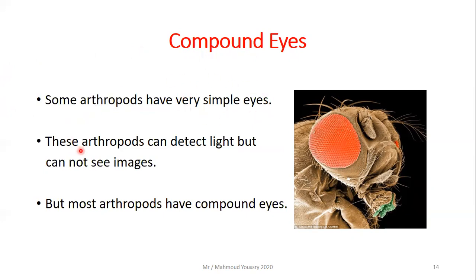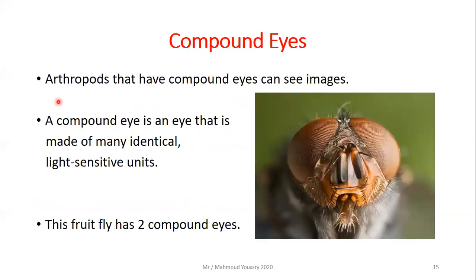Some arthropods have very simple eyes that can detect light but cannot form images. Most arthropods, however, have compound eyes. A compound eye is made of many identical light-sensitive units arranged together — for example, the house fly's compound eyes can form images. A fruit fly has two compound eyes.